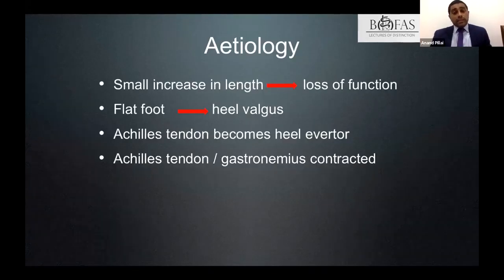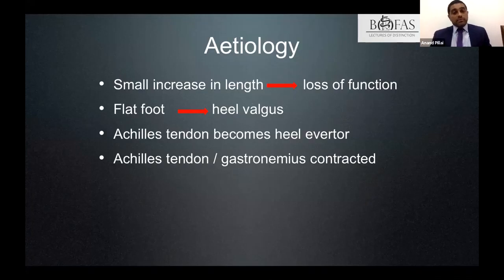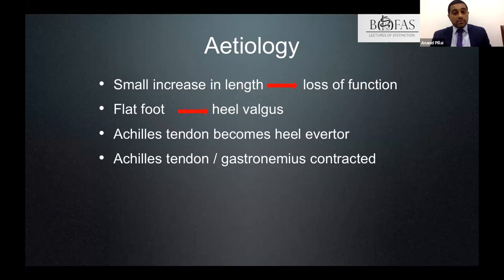The tibialis posterior tendon has an area of relative ischemia between the medial malleolus and its insertion into the navicular, where the tendon becomes dysfunctional. Because of the tendon's excursion, even a small increase in length can result in loss of function. As heel valgus develops, the Achilles — normally stronger and intact — becomes a heel averter, and over time becomes contracted and a contributor to the deformity.